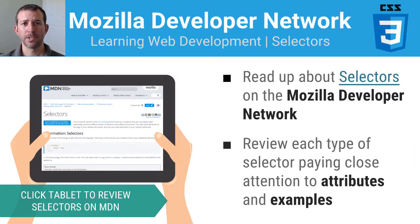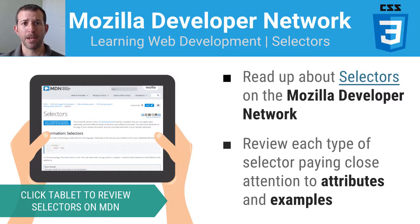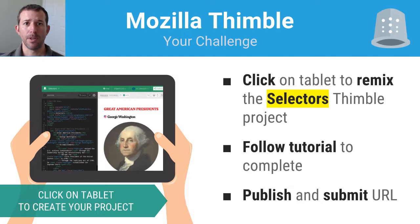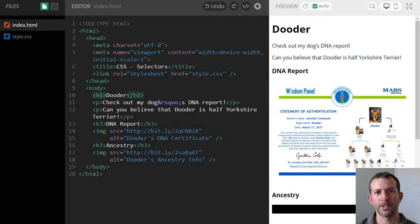Make sure you return to the presentation and visit the Mozilla Developer Network and read up on selectors. Pay close attention to the examples. Then do the Thimble Mini Challenge called "selectors" — it will get you hands-on experience with the types of CSS selectors we've talked about today. I want you to really focus in on two of them: ID selectors and class selectors.